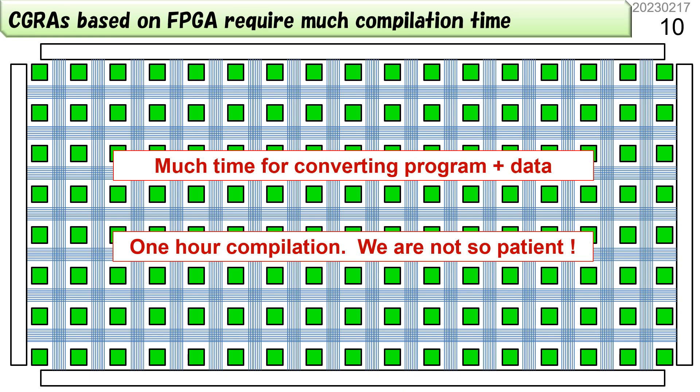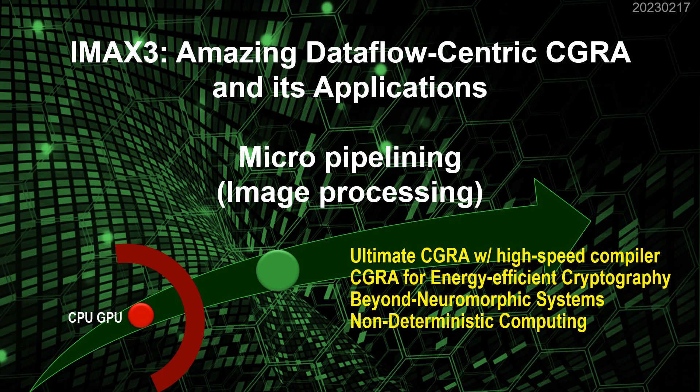We can see various configurations of CGRAs, but most CGRAs imitate the FPGA structure and take an hour for heuristic compilation. We should reduce the time for compiling by changing the architecture. Now let's see how applications run on IMAX 3. The keyword is multi-level pipelining.